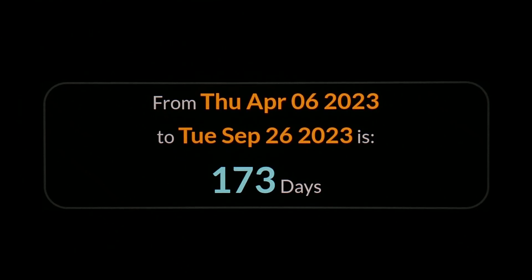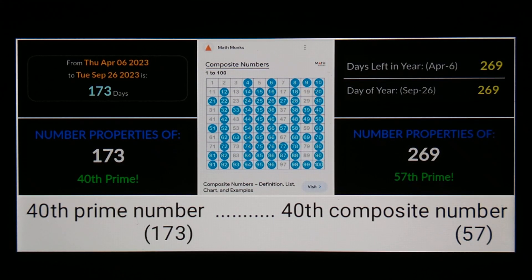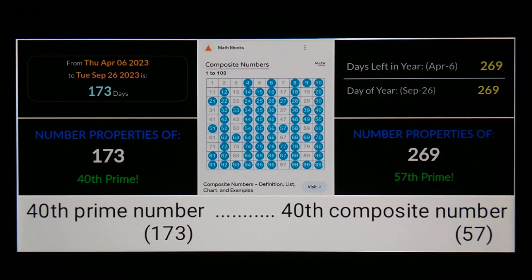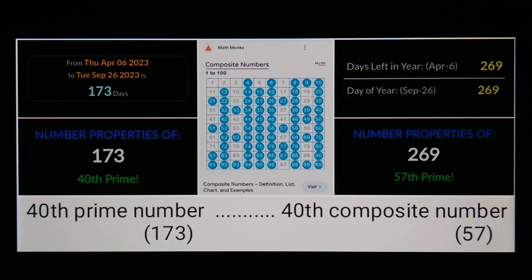Remember, we were talking about these dates that connect with this guy's area code. The 269th day of a standard year is September 26th; the day leaving 269 days left is April 6th. From April 6th until September 26th is 173 days. Again, 173 is the 40th prime number, and the 40th composite number is 57.